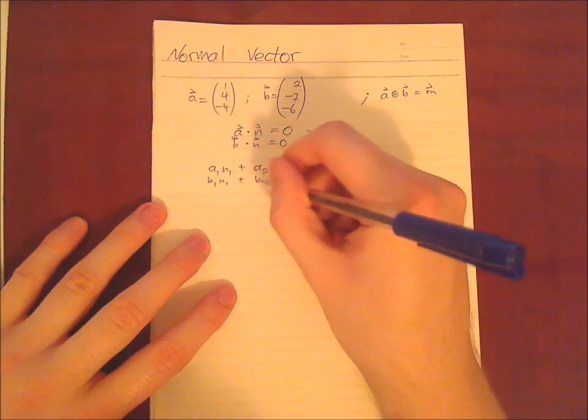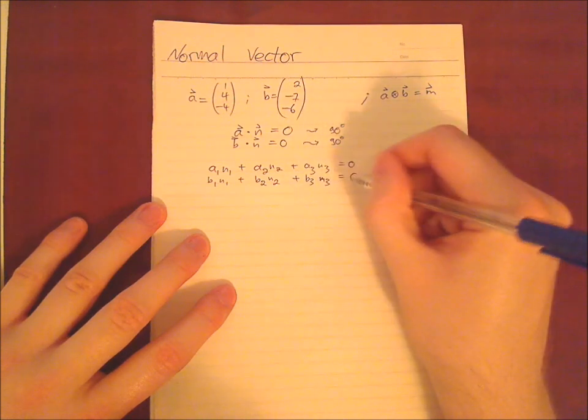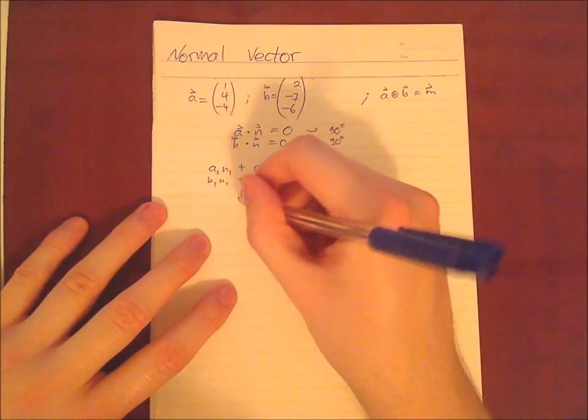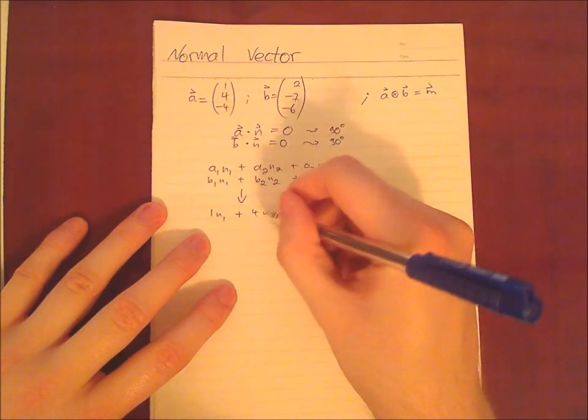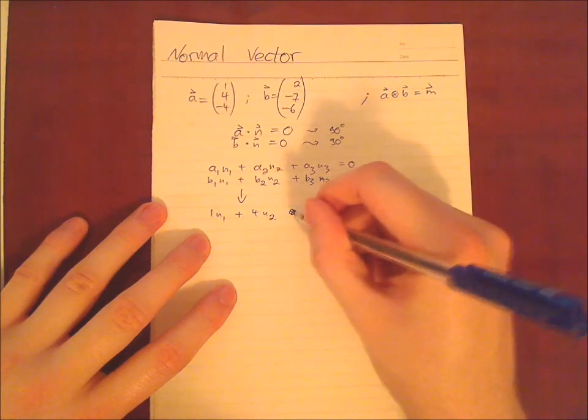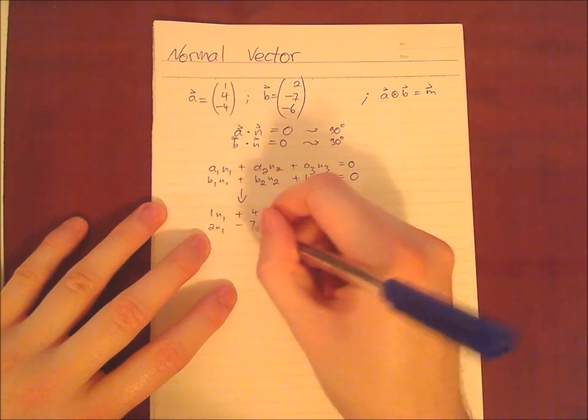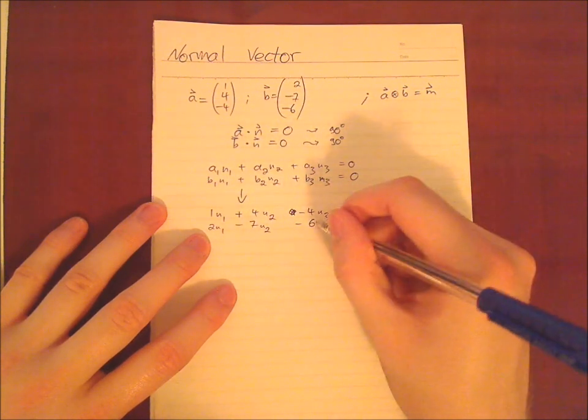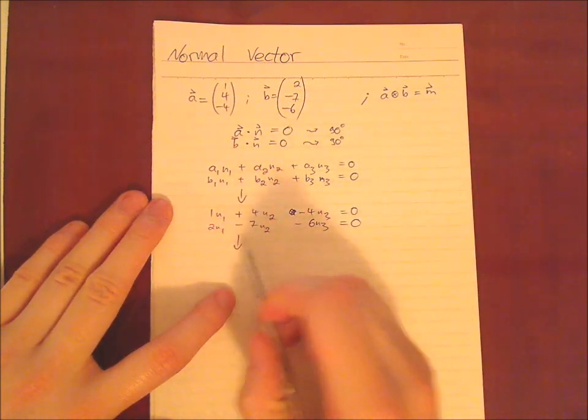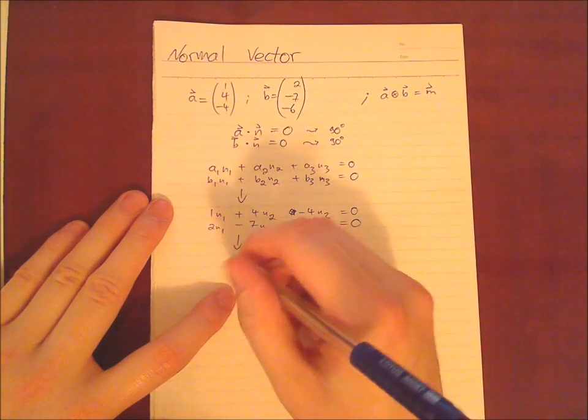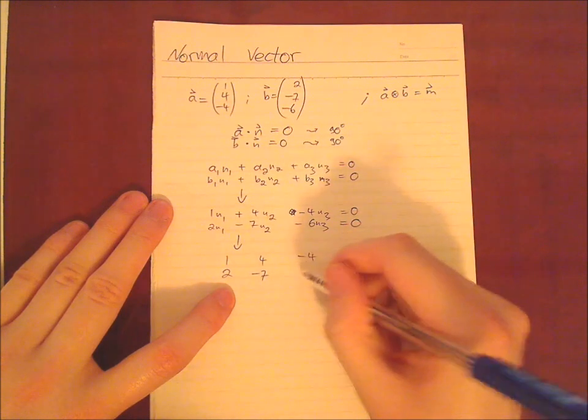So we just insert our numbers. We have 1n1 plus 4n2 plus minus 4n3 equals zero. 2n1 minus 7n2 minus 6n3 equals zero. You can transform this into a matrix since it's a linear system of equations. 1, 4, minus 4, zero. 2, minus 7, minus 6, zero.